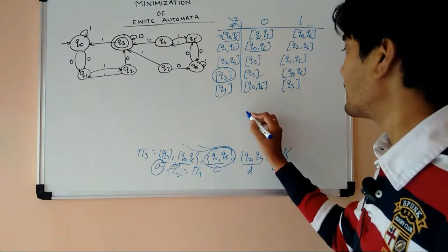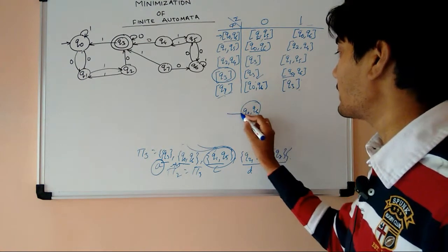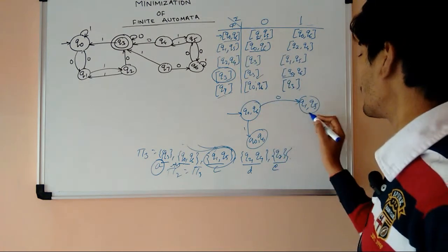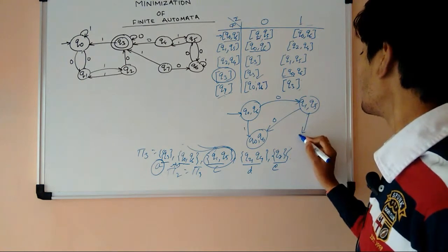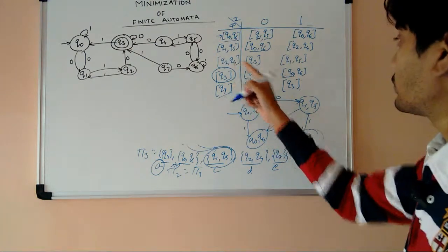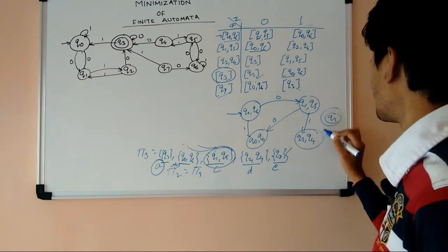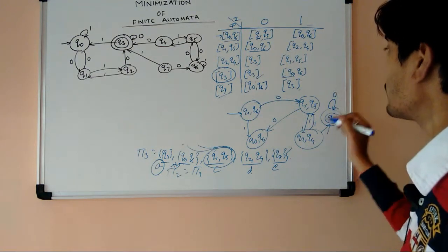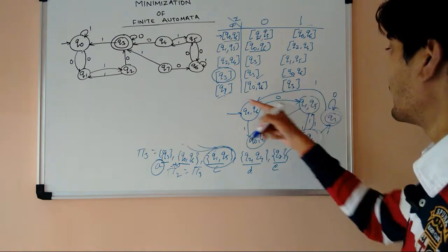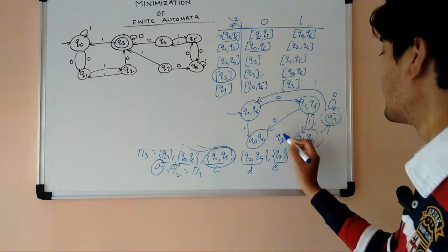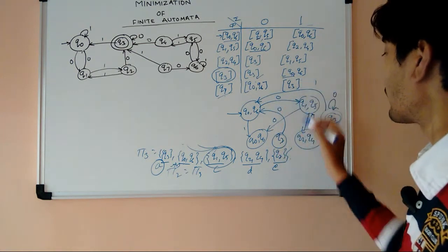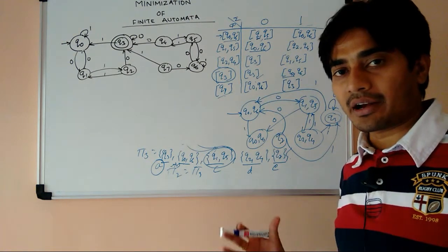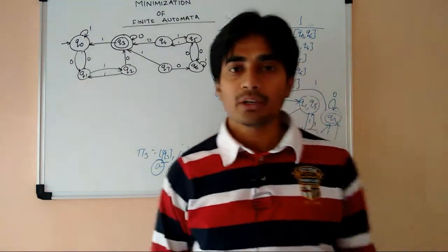Now we draw the minimized transition diagram. {Q0, Q6} is the initial state; for 0 it loops to {Q1, Q5} and for 1 it loops back to itself. {Q1, Q5} for 0 goes to {Q0, Q6} and for 1 goes to {Q2, Q4}. {Q2, Q4} for 0 goes to Q3 and for 1 goes back within its set. Q3 for 0 loops back and for 1 goes to {Q0, Q6}. Q7 for 0 goes to {Q0, Q6} and for 1 goes to Q3. This is our minimized transition diagram for the finite automata. Hope you understand the concepts of minimization.